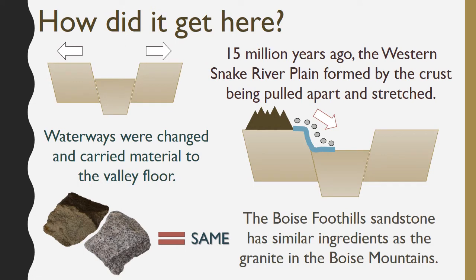So why do we have sandstone in the Boise foothills? Where did all of this sand or sediment come from? Boise is located in the western Snake River Plain, between the Boise and Owyhee Mountains. About 15 million years ago, the western Snake River Plain was formed when the upper crust in this area was pulled apart, forming a broad valley between mountain ranges. Regional waterways such as rivers and mountain streams were diverted to the forming valley, and this water flowed from high elevations in the mountains, transporting sediment, rock, and debris downhill to the valley floor.